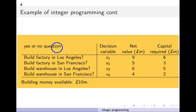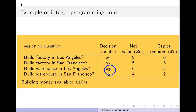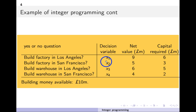Here's the table of decision variables: x1 is build a factory in Los Angeles, x2 is build a factory in San Francisco, x3 is build a warehouse in Los Angeles, and x4 is build a warehouse in San Francisco.